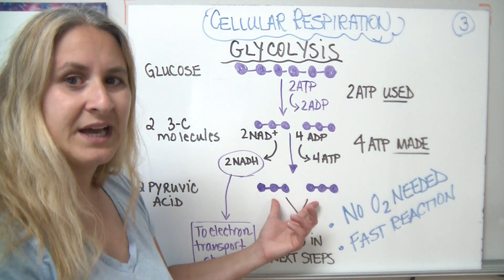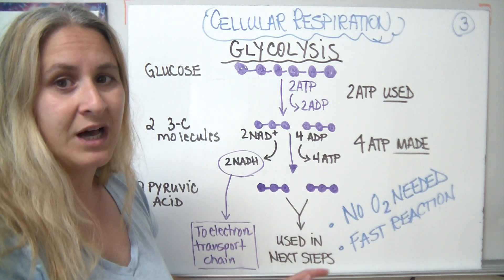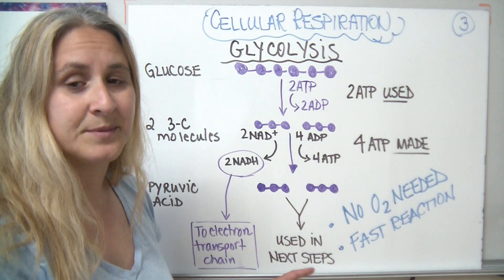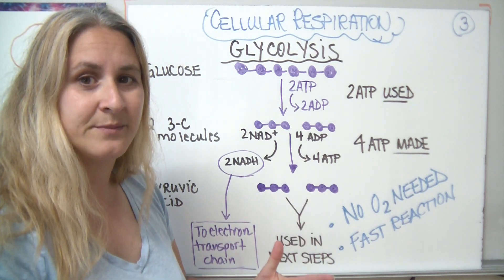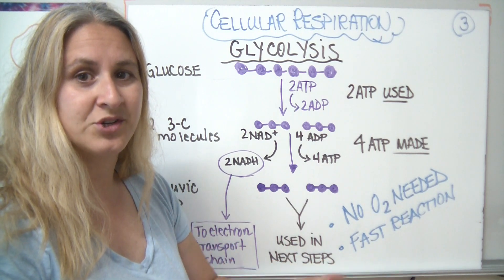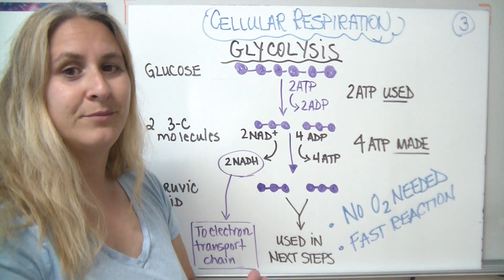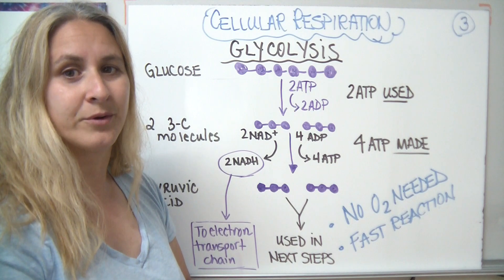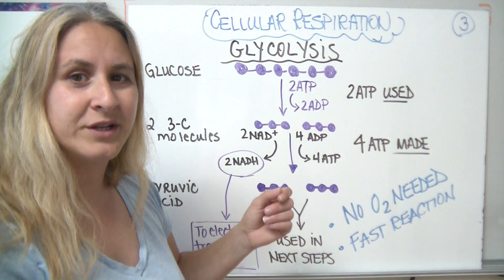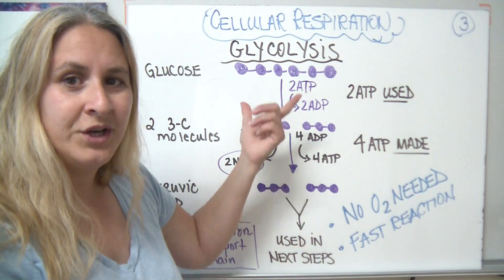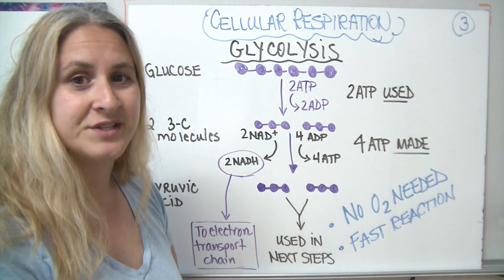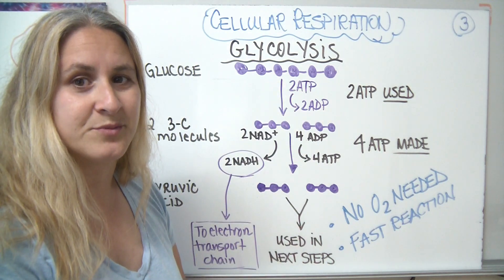Once we get our pyruvic acid it's going to move on from glycolysis and be used in the next steps. Depending on the type of organism, it may continue with anaerobic respiration or it may move into the mitochondria for aerobic respiration. But regardless of what kind of organism you are, you always start with glycolysis — this is the first step of cellular respiration.